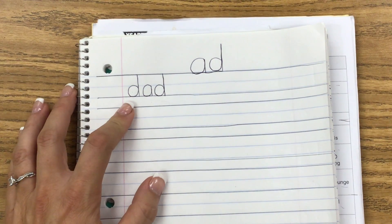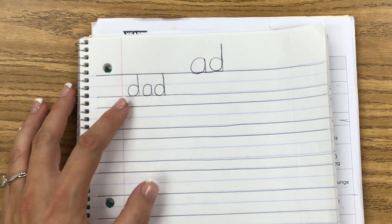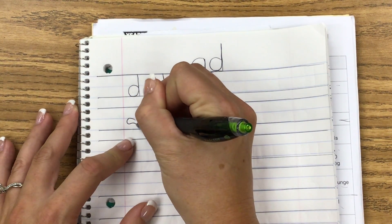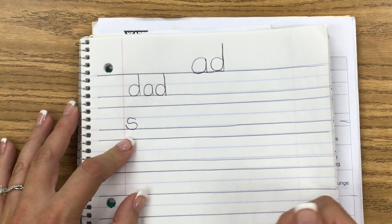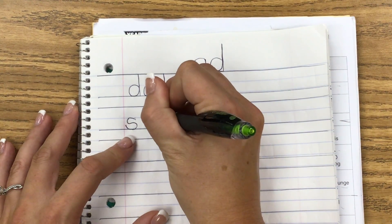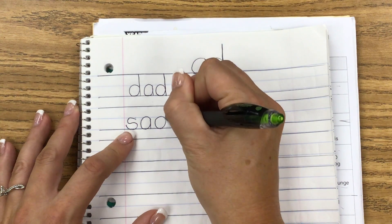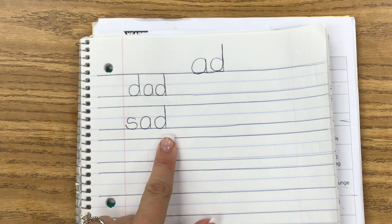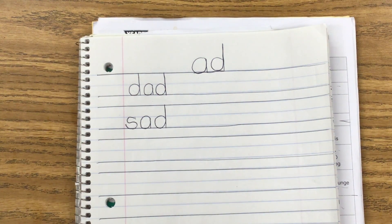What if instead of a D, we change that to an S. So, we're going to come down here and use the S. Making sure that it fits like a clock letter. So, instead of DAD, we have S-AD. Let's get our motor running. S-AD. Oh, sad.